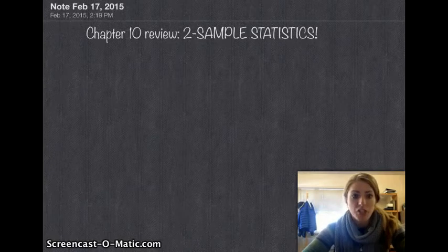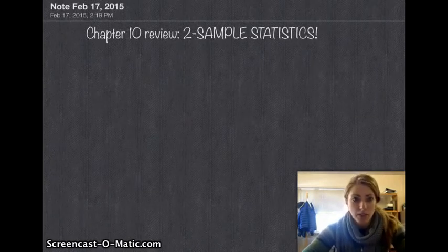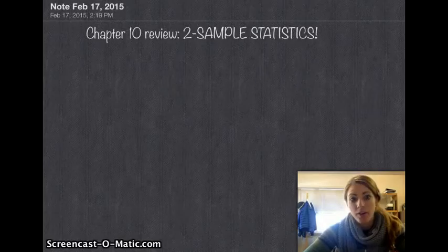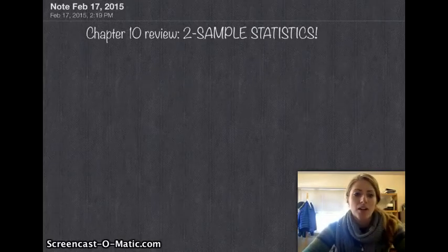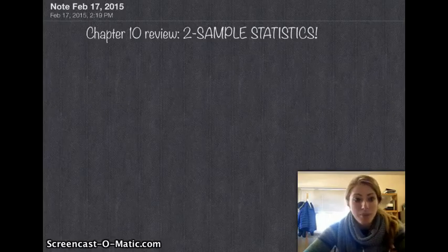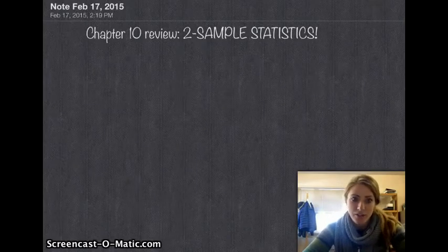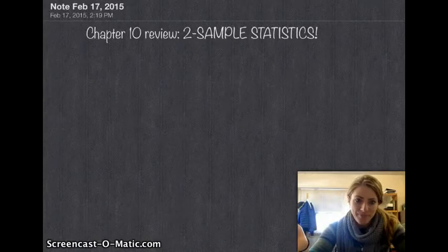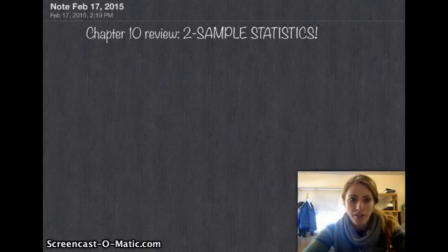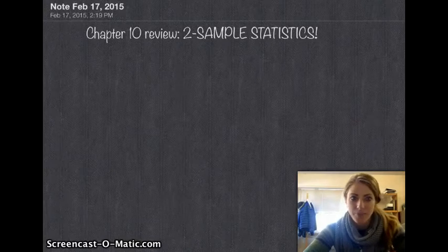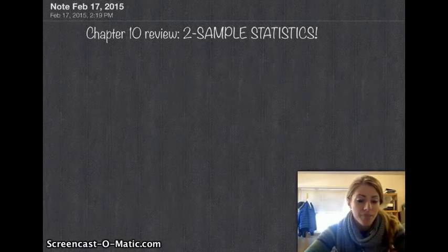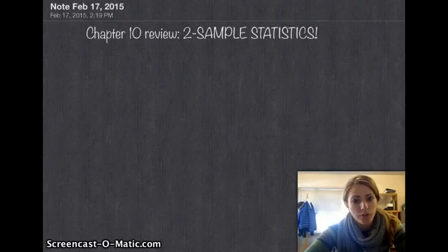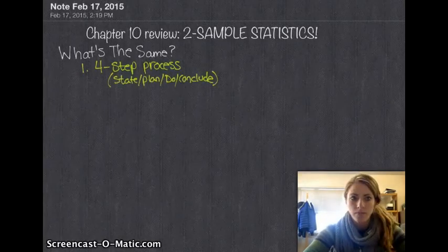Anyways, the overall picture is exactly the same as it has been the last two chapters. State, plan, do, conclude. Stating either we're going to construct a confidence interval to see if there's a difference, or we're going to do a two-sample hypothesis test to see if there's a difference. So that's your state section. Overall, that is exactly the same. The state, plan, do, conclude.